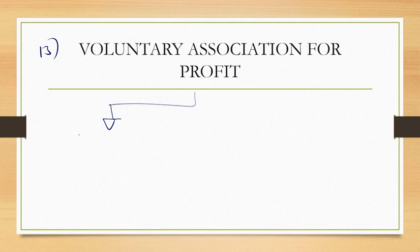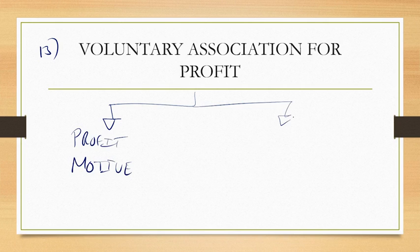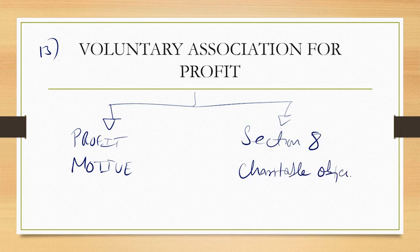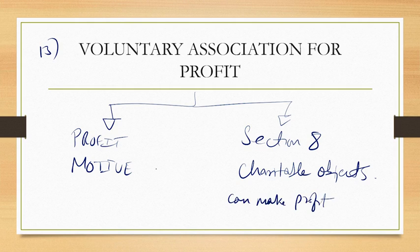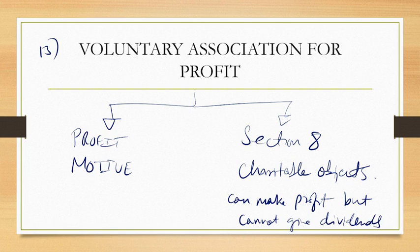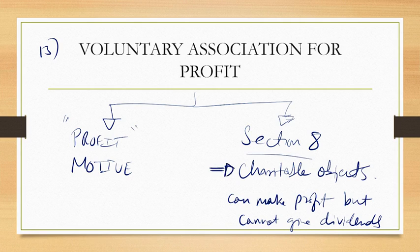The thirteenth feature is voluntary association for profit. A company is started for profit motive. There is an exception — Section 8 company, which is for charitable objects. A Section 8 company can make profit but it is not profit-motivated, and it cannot give dividends. The general meaning is that a company's objective is to make profit, but Section 8 companies can make profit without distributing it as dividends.